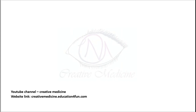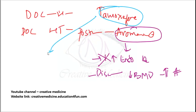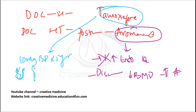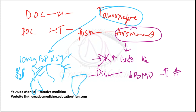The dose of tamoxifen is 10 mg BD for 5 years. It is a partial agonist on the pituitary gland, bone, uterus, and liver, and it has antagonistic action on breast cells and blood vessels. The main side effects include hot flushes, increased vaginal bleeding, increased deep venous thrombosis, thromboembolic complications, endometrial cancer, decreased visual acuity, and retinal deposits.